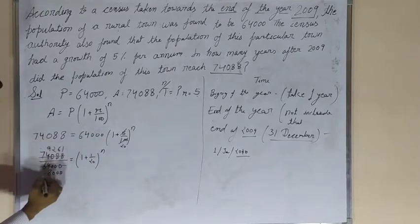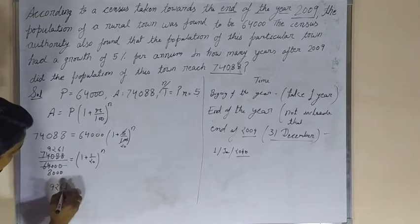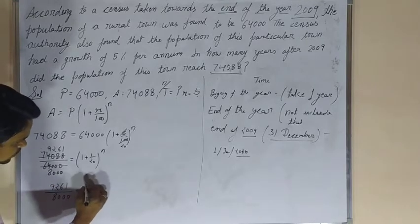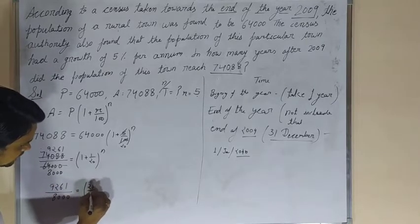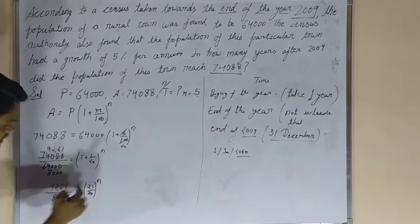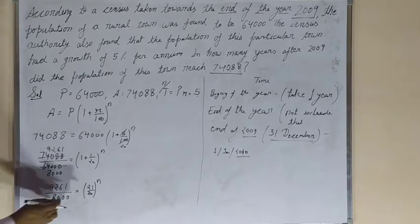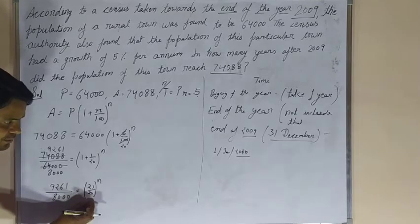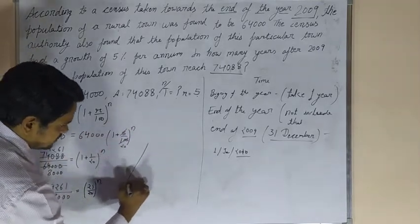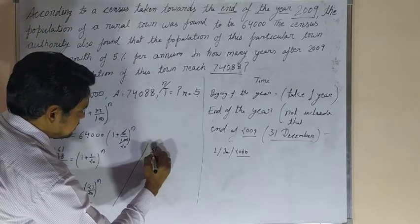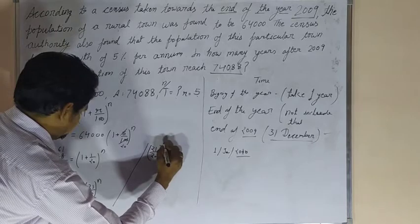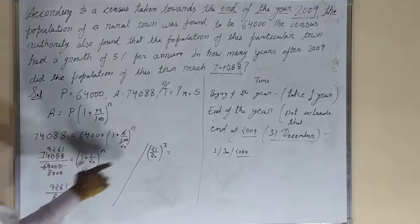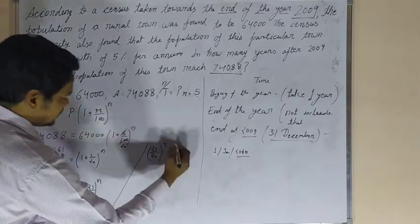We write 9261 divided by 8000 equals (21 by 20) raised to N. If the bases are the same, then the exponents are equal, which means N equals 3.